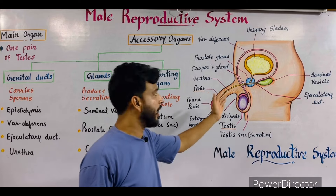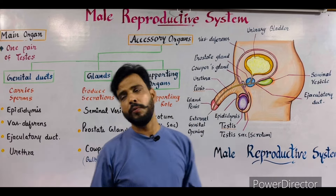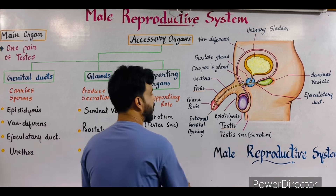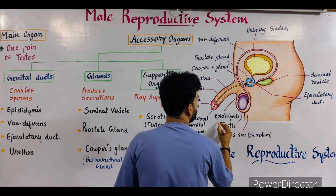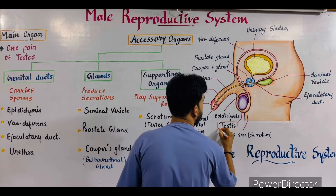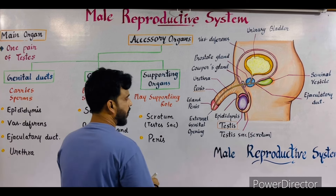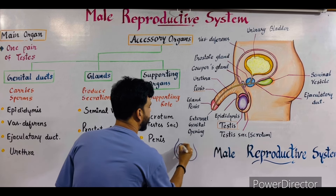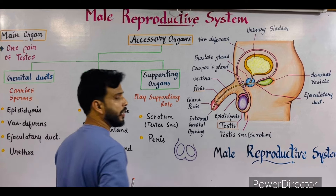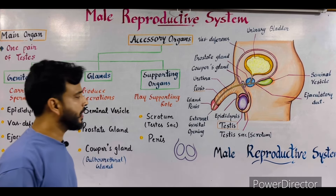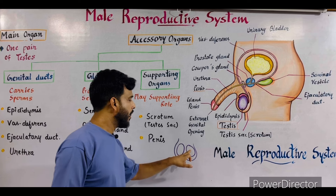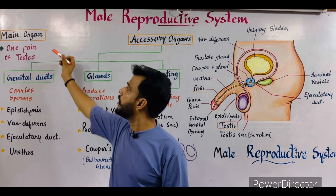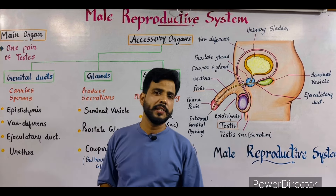I will explain all the details with the help of this diagram and then discuss the chart. As you can see in this diagram, these are the testes — one pair. In the front view you can see there is one pair of testes found in the male, and these are the main reproductive organs.